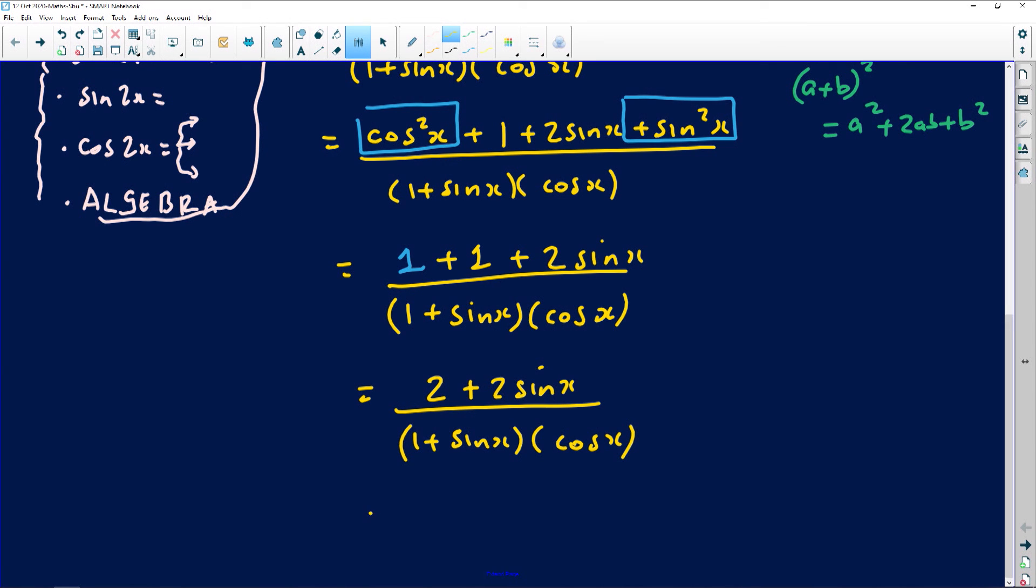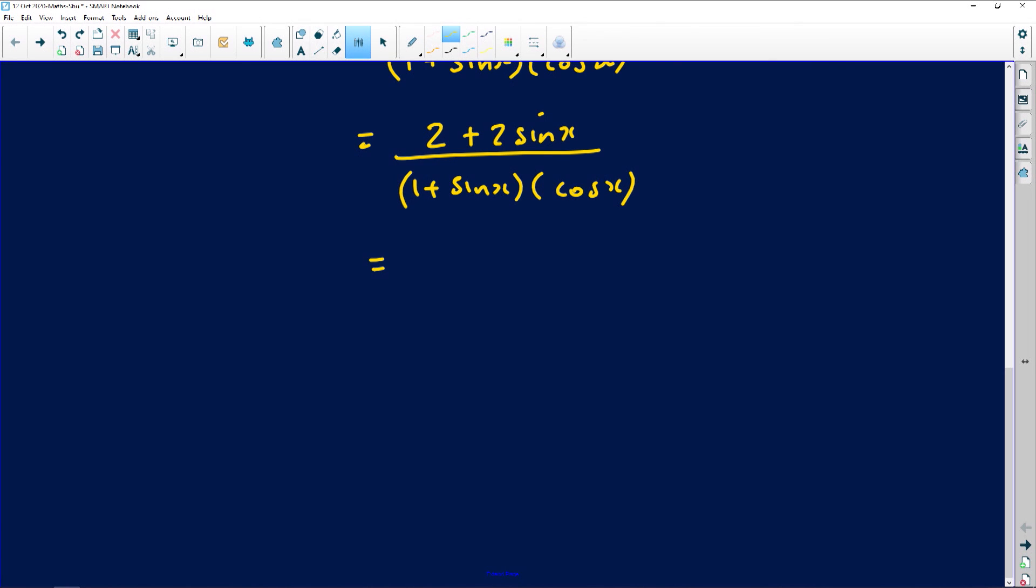Now algebra plays a big role. What do you see on the numerator? I see a common factor which is 2. So I'm factoring out 2. When you factor out 2 you're left with 1 plus the sine of x, because 2 times 1 will give you back 2, and then 2 times sine of x will give you back 2 sine of x, divided by 1 plus sine of x and then this is still multiplied with the cosine of x. What happens now? This guy divides that off.